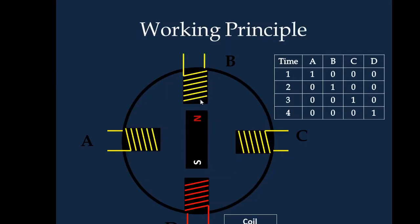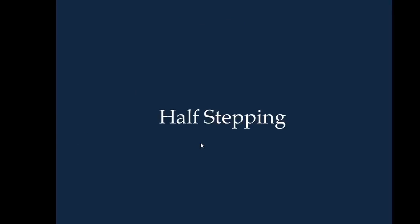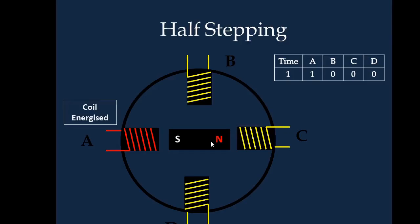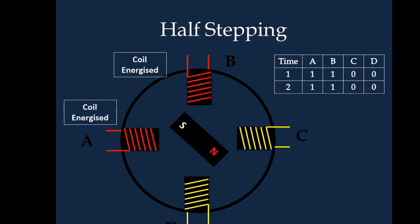In this diagram we have four positions where the rotor stays. Now when we go for half stepping, instead of four positions we will have eight positions. In the first instant A is energized so it will be in this position. In the next instant coil A and B are both energized, denoted by 1, so the center rotor which is a permanent magnet is positioned halfway between A and B. This is what is called half stepping.